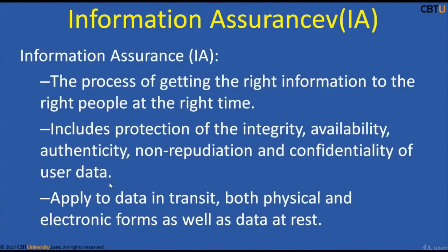Information Assurance is the process of getting the right information to the right people at the right time. Information Assurance includes protection of integrity, availability, authenticity, non-repudiation, and confidentiality of user data. It uses physical, technical, and administrative controls to accomplish these tasks. These protections apply to data in transit and data at rest, in both physical and electronic forms.